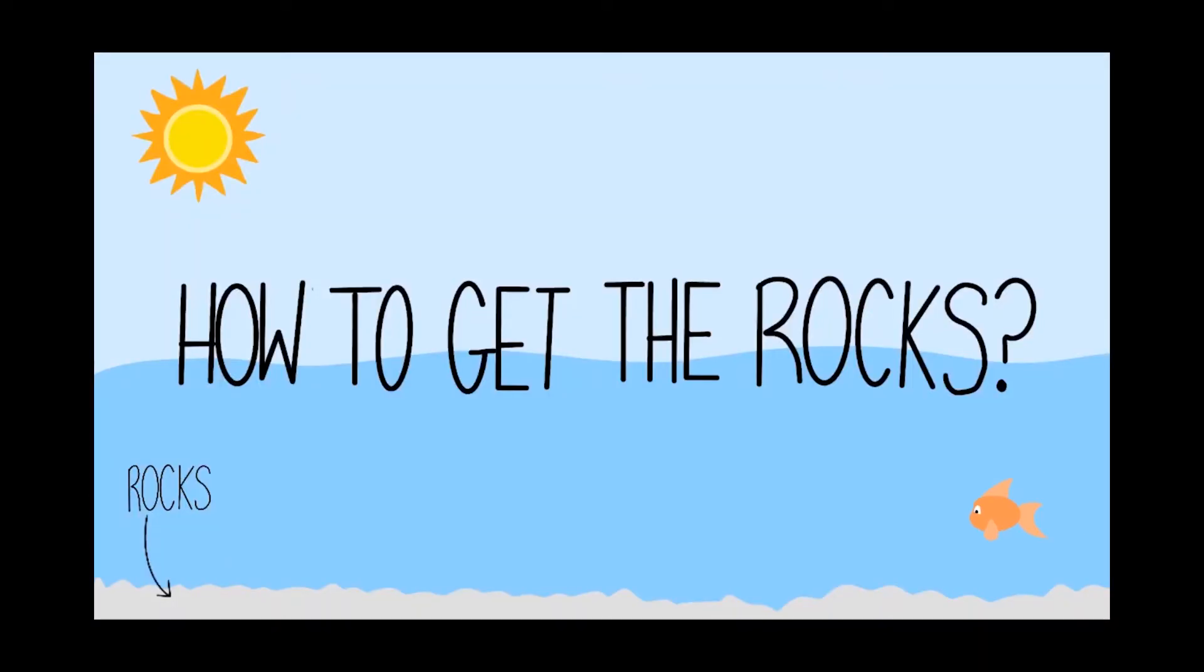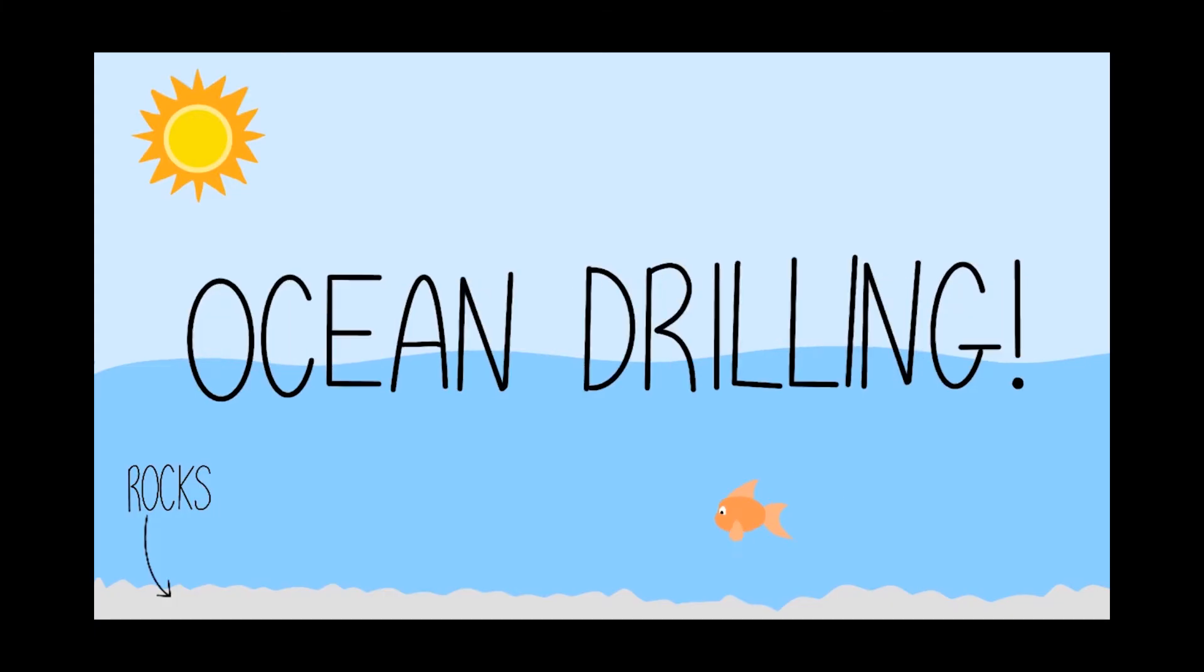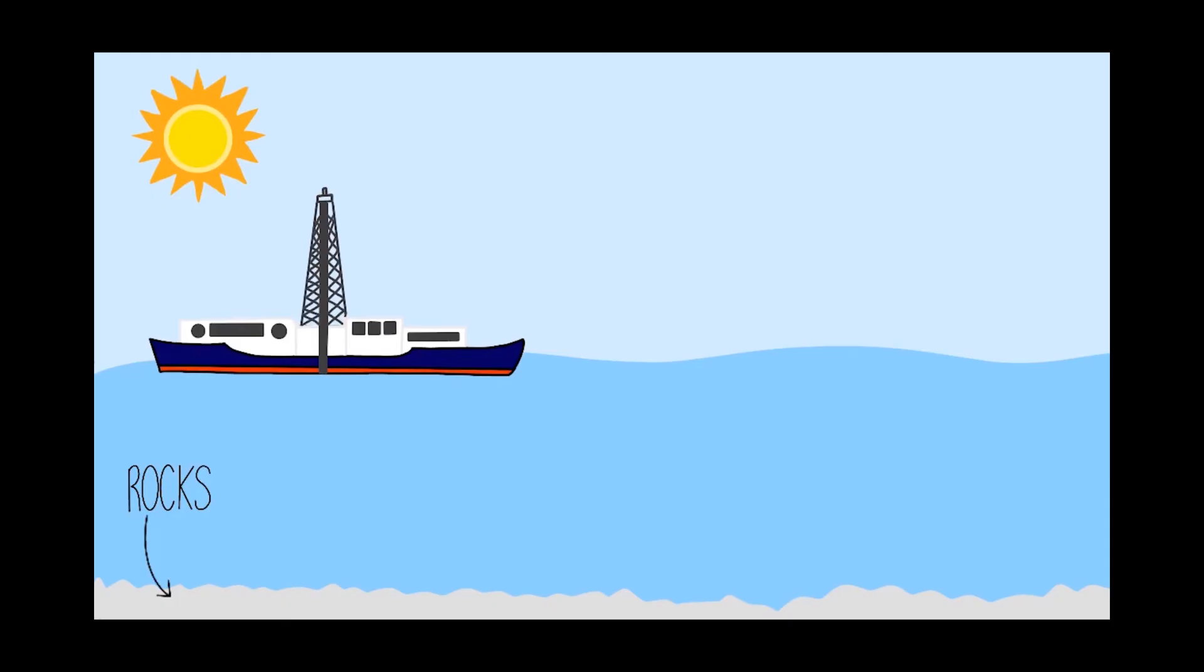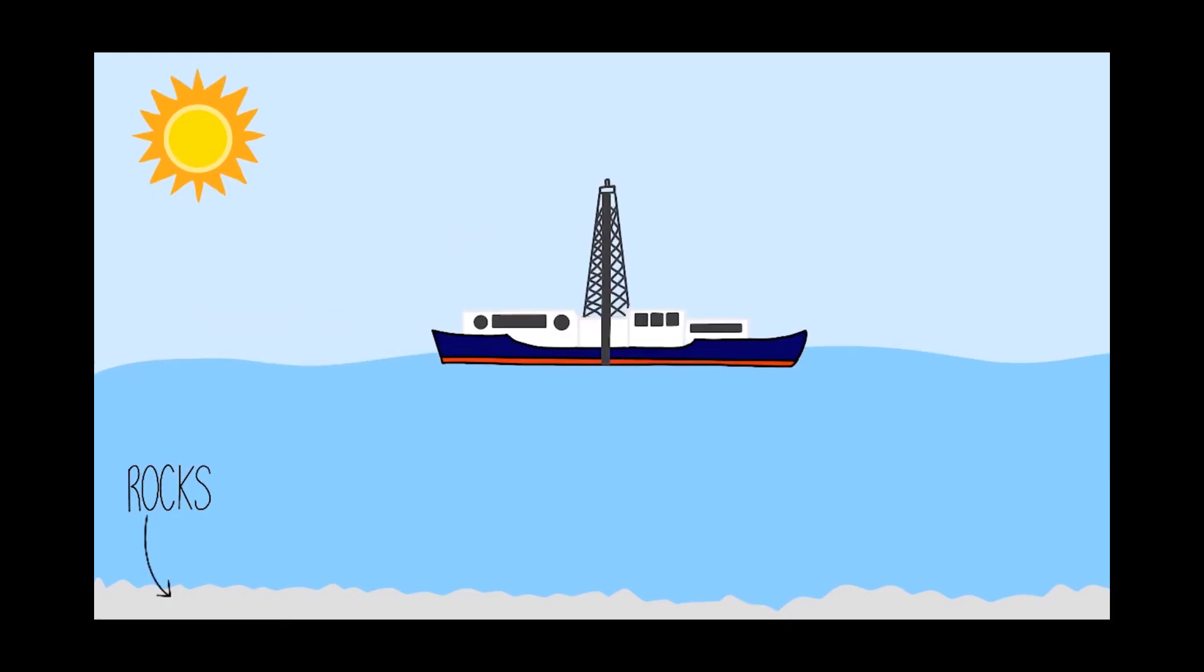Rocks that contain nanofossils are formed at the bottom of the oceans. One way we can get them is through scientific ocean drilling. This means that a big ship sails into the middle of the ocean and sends a drill down to the ocean floor, and brings up long cores of rock and sediment, which are then brought back to shore and studied.